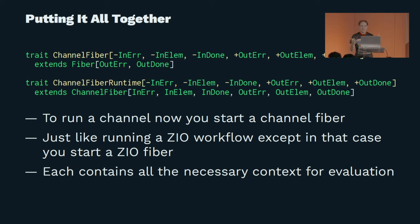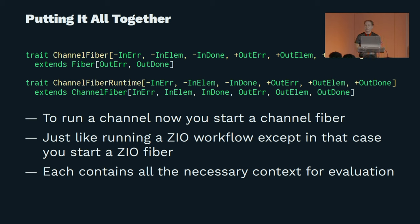So in ZEO 2.1 you're going to have a new thing called a channel fiber, and in particular a variant called a channel fiber runtime used privately within ZEO. What it means to run a channel is you just create one of these channel fiber runtimes and it starts executing the different instructions — write, read, flatMap, concatMap — one at a time.